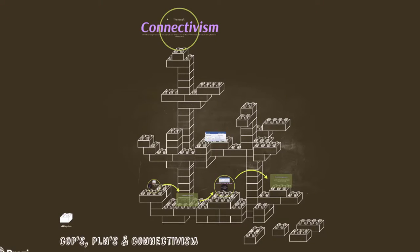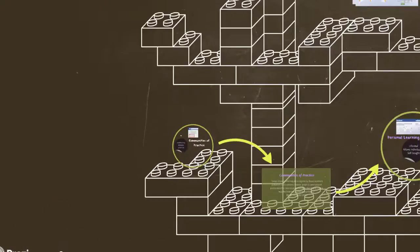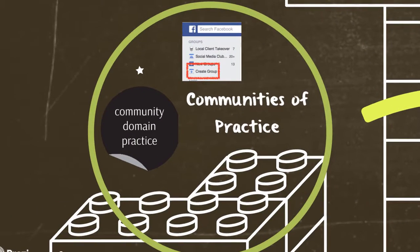Rob Lehrer describes a connected educator as one who interacts with professional educators around the world in order to construct new knowledge and deepen their understanding. The networking and collaboration I participate in has advanced to an entirely new level, and that began in EdTech 543, Social Network Learning, when we were asked to research communities of practice, personal learning networks, and connectivism. I created a Prezi to accurately portray my interpretation of these concepts and their interconnectedness.